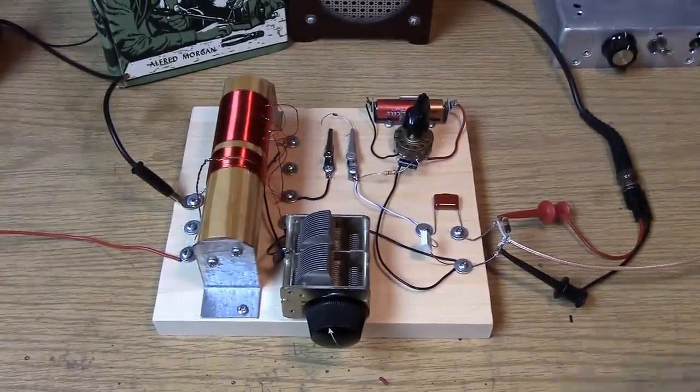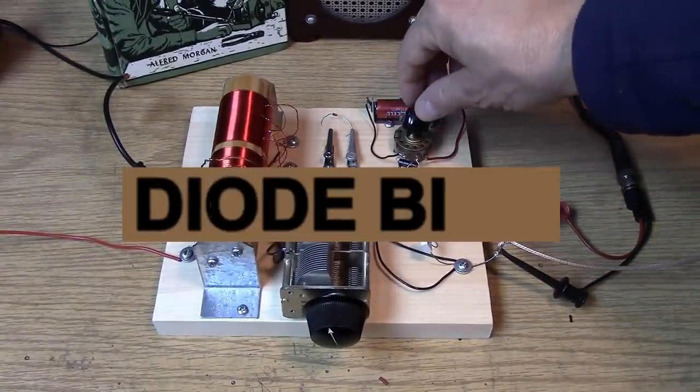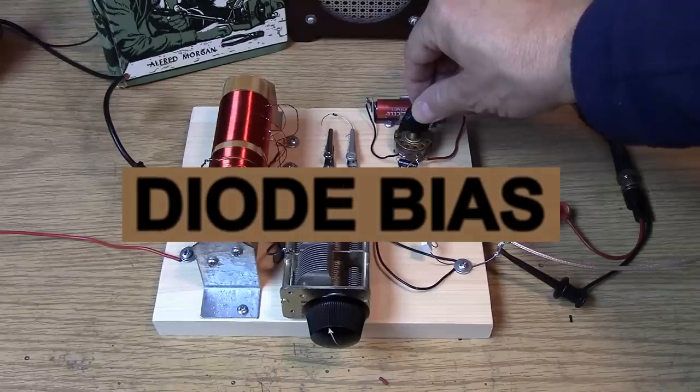So we have the bias Schottky set up. Let's start turning up the bias. We're not quite ready to beat this crystal set into the ground yet. We've got a little more to discuss.